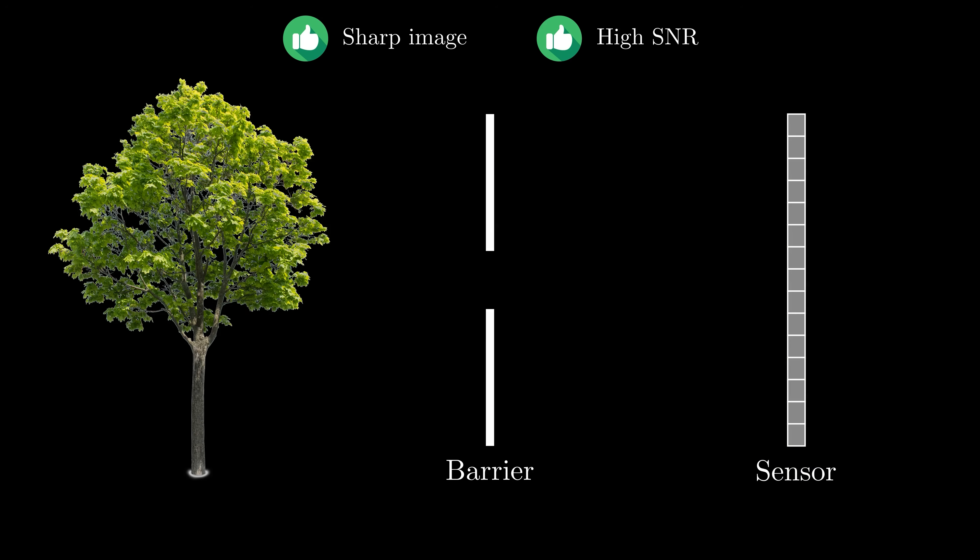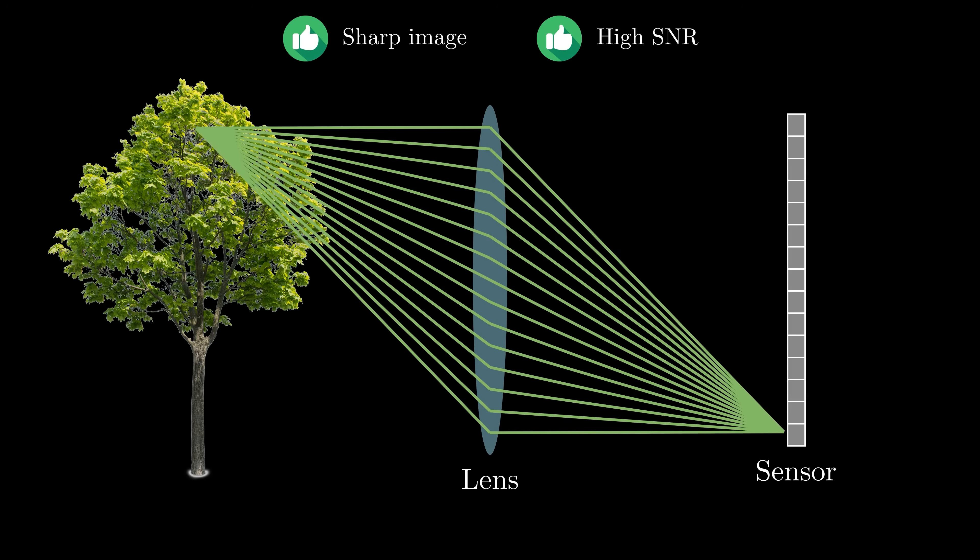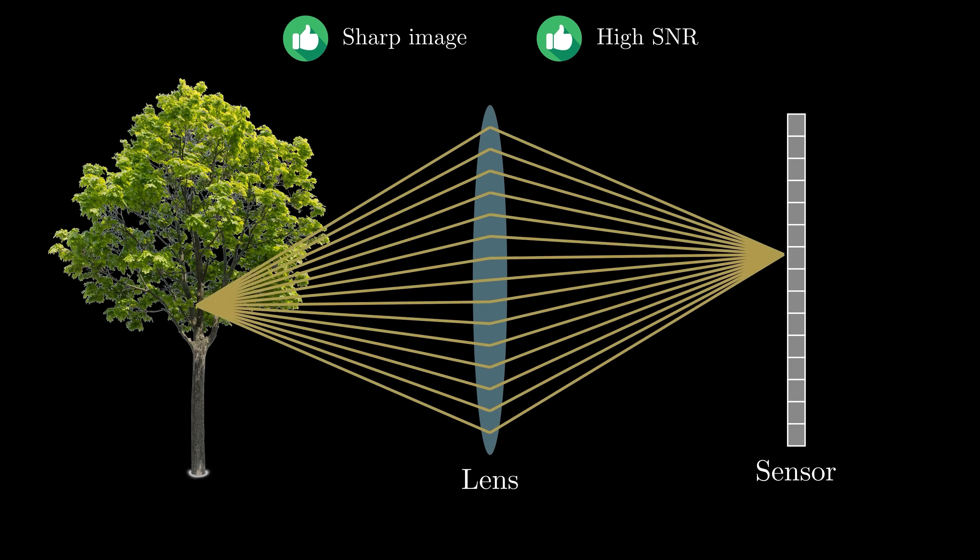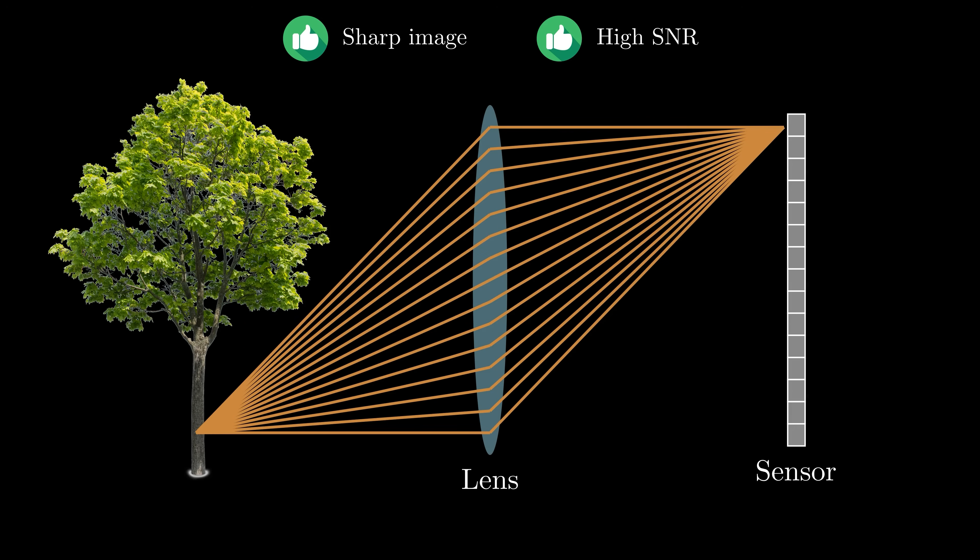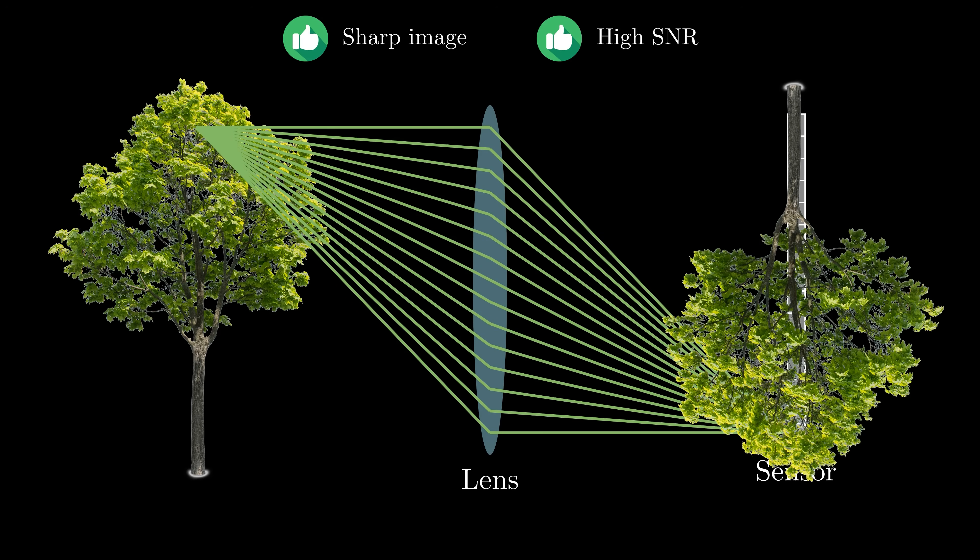To do so, we replace the barrier with a lens. The lens bends incoming light rays and focuses them on the sensor. This means that the incoming light rays coming from a particular point in the scene converges to a corresponding point on the sensor. This ability to focus light enables us to use a larger aperture, capturing more light for a higher signal-to-noise ratio while maintaining a sharp focus.